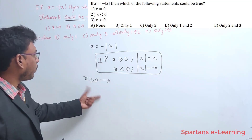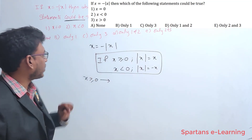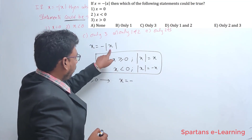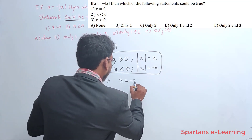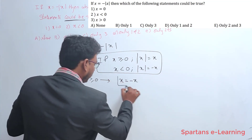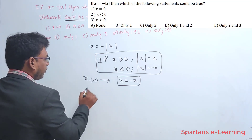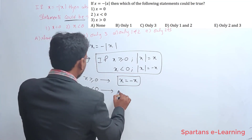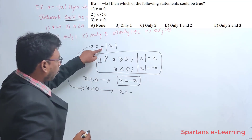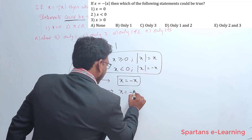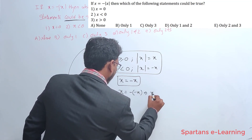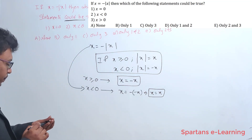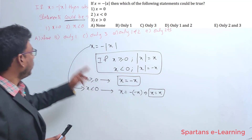Now, x = -|x|. We take two cases. If x ≥ 0, then |x| = x, so the equation becomes x = -x. If x < 0, then |x| = -x, so -|x| = -(-x) = x, making the equation x = x. We got two results: for x ≥ 0, we get x = -x; for x < 0, we get x = x.